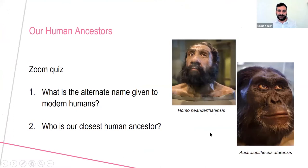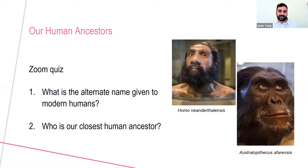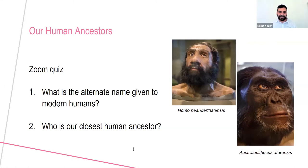Before we get into any of the nitty-gritty, I thought I'd do a quick poll with you. Here we've got a few images of our human ancestors — maybe some of these names are familiar to you. We've got Homo neanderthalensis and Australopithecus afarensis — these are artists' impressions of our human ancestors. I'm going to ask you two questions: what is the alternate name, or scientific name, given to modern humans? And who is our closest human ancestor? I'm going to send a little poll to you now — a window will pop up on your screen. Please choose the answer you think is most appropriate — there's no wrong or right answer.